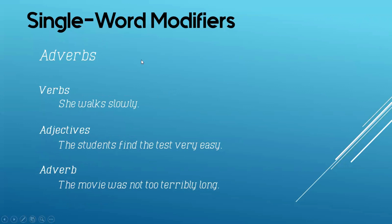How about for adverbs? Adverbs modify verbs, adjectives, or another adverb. For number one, we have 'she walks slowly.' What is the adverb here? It is slowly. Sentence number two: 'The students find the test very easy.' What's the adverb? Correct — it is very.